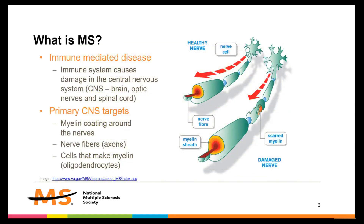The first part in understanding MS is to understand the central nervous system, or CNS, and how the immune system attacks the CNS in MS. The CNS makes up the brain, spinal cord, and optic nerves. MS is an unpredictable, potentially disabling disease that disrupts the flow of information within the brain and between the brain and the body. MS is an immune-mediated disease, that is, a disease of the immune system.